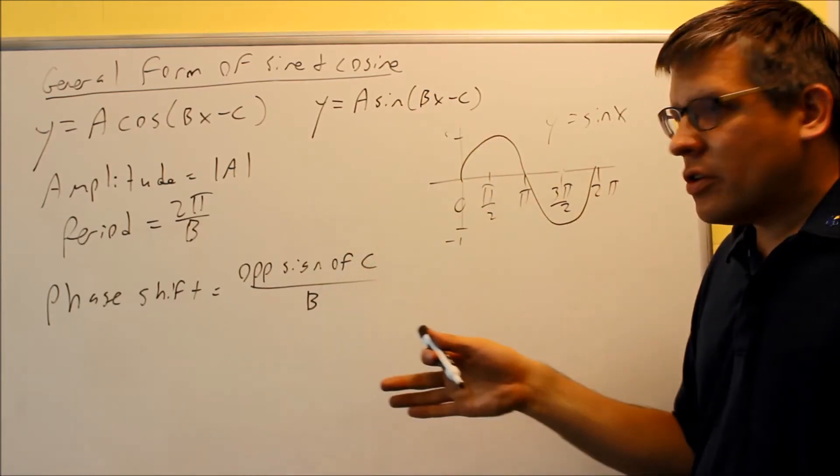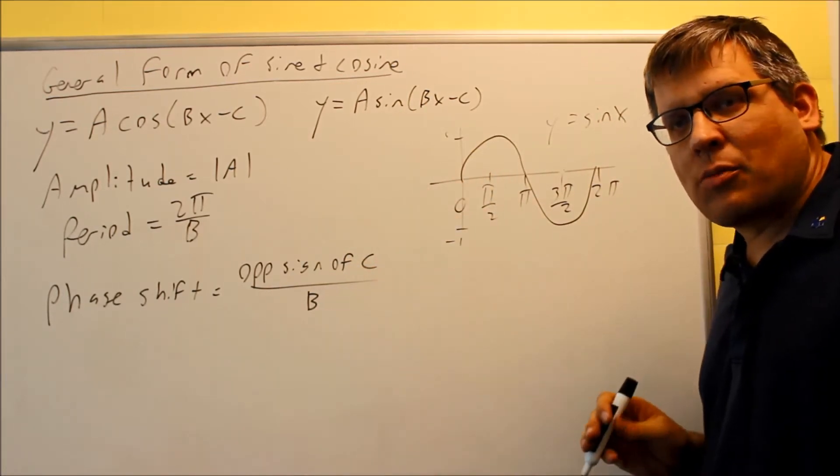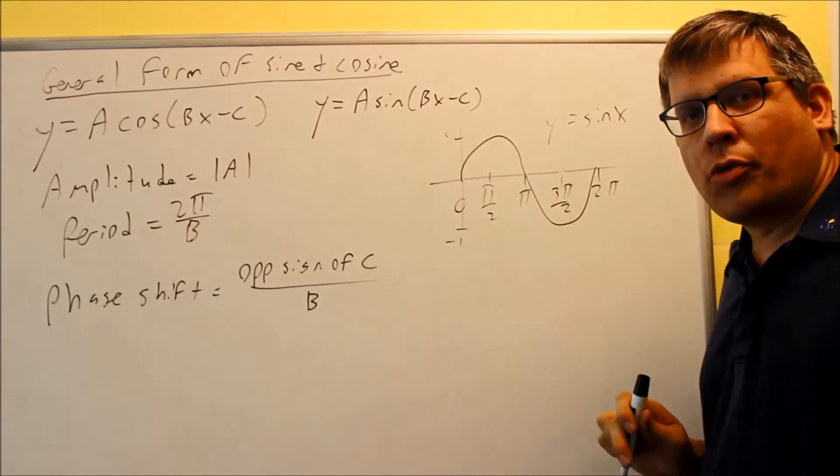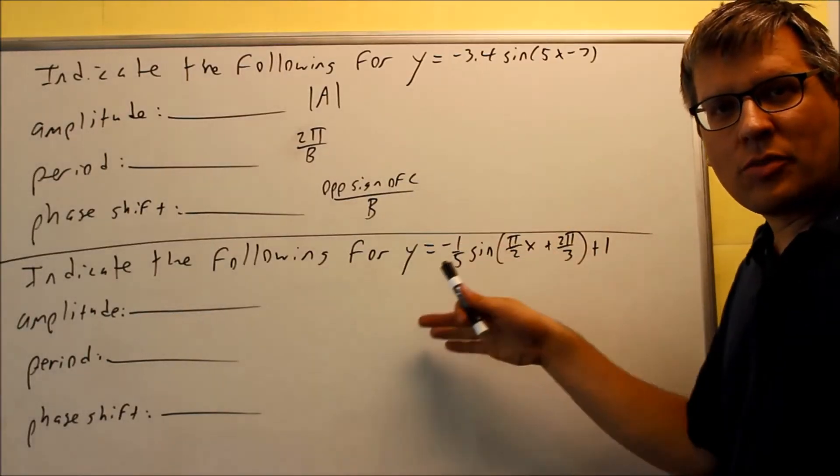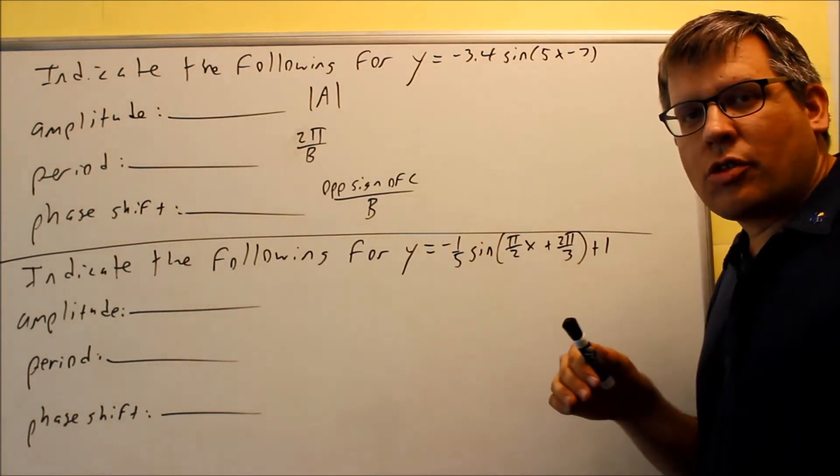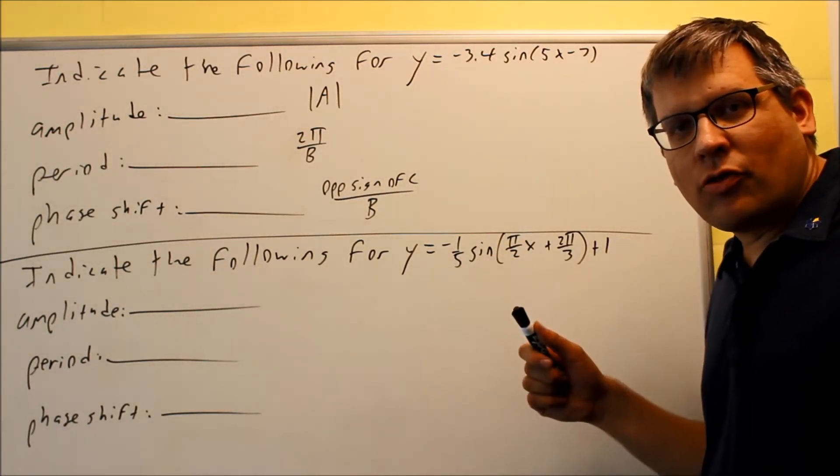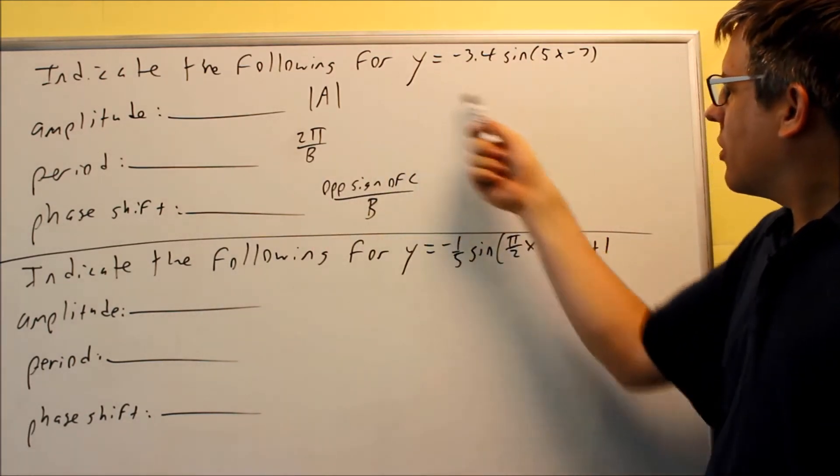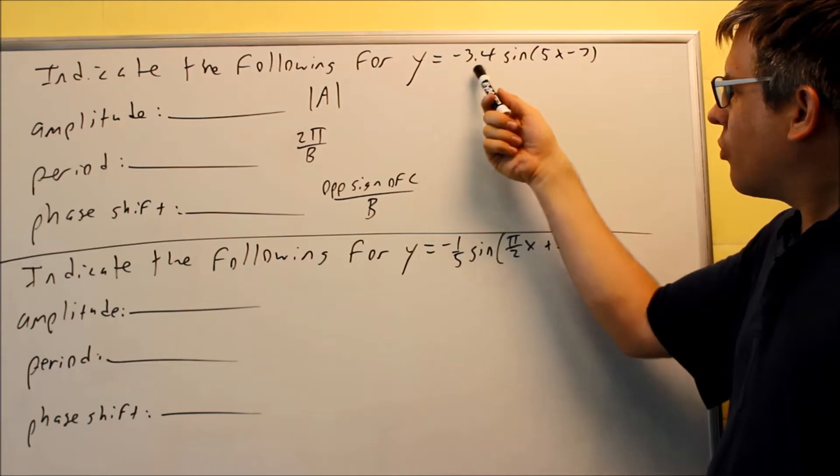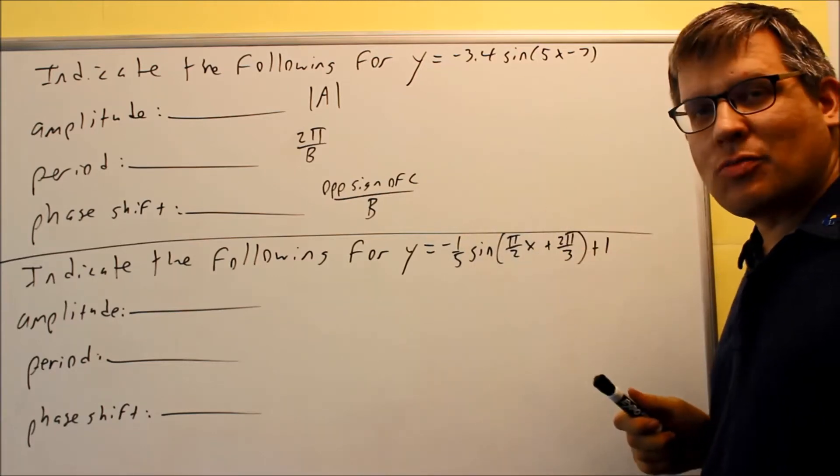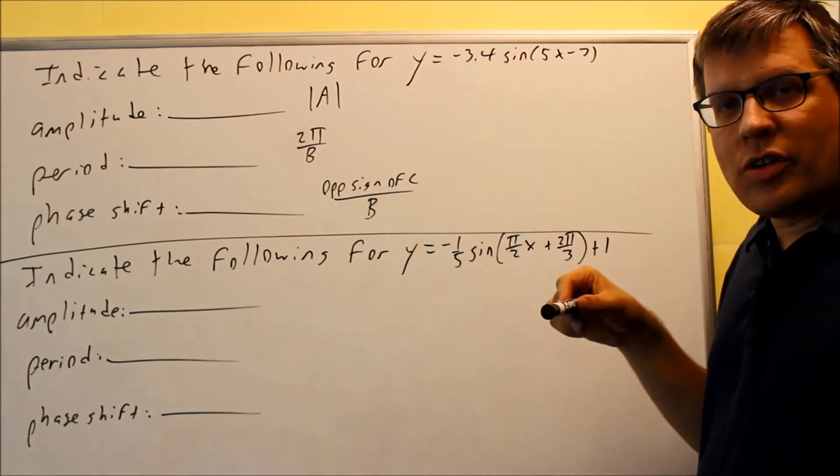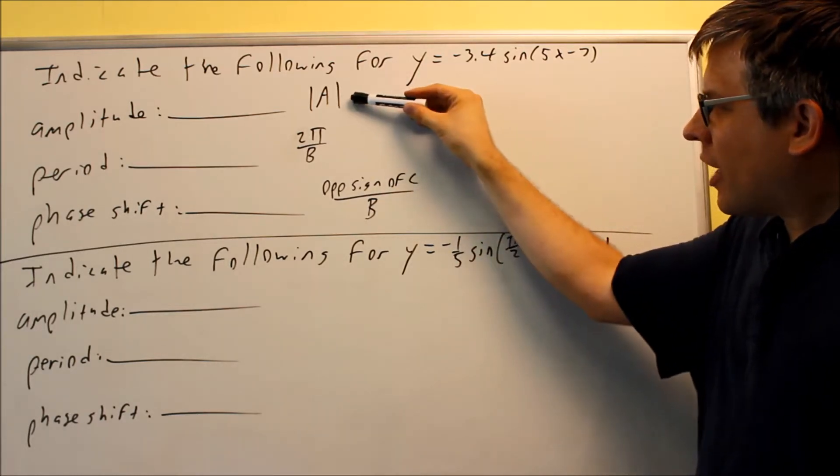Now that we've taken a look at these definitions, let's now look at some examples that have us working with pulling the information out of the formula. I have two problems here that's going to be utilizing the formulas we just talked about for finding the amplitude, the period, and the phase shift. Here's the example we're going to look at: y equals negative 3.4 sine 5x minus 7. Here are the formulas we just talked about previously.